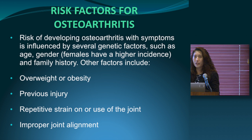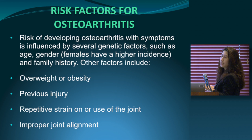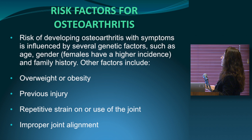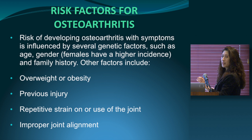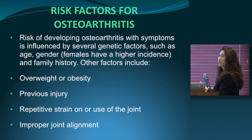The risk factors for developing osteoarthritis include genetic predispositions such as age, gender — usually female more than male — and family history. Other very important factors are being overweight, previous trauma to the joints, repetitive strain or use of the joints, improper joint alignment, and gait.